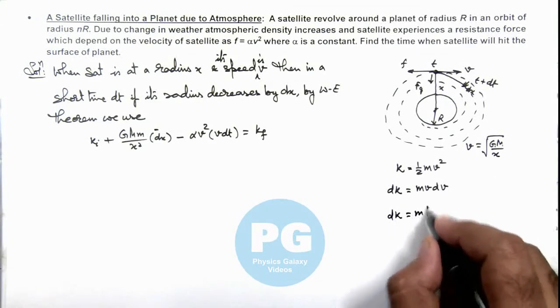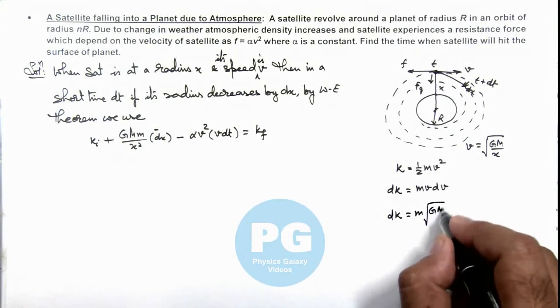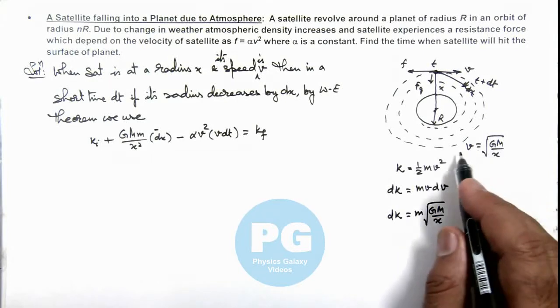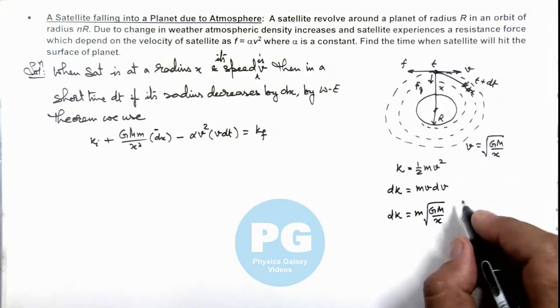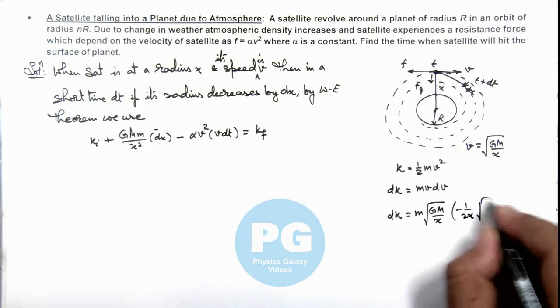So if we substitute the value here, the value of dk will be m multiplied by √(GM/x) dx multiplied by dv. Here dv can be given as -½ · 1/x √(GM/x) dx.